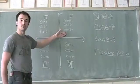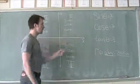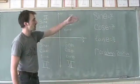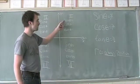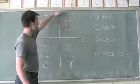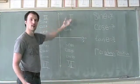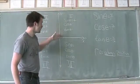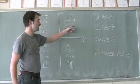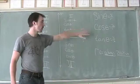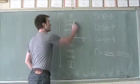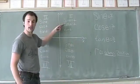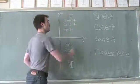In quadrant 1, both the x value and the y value are positive. Since r is always a positive value, the sine of theta — which is y divided by r — is positive divided by positive, giving a positive value. Cosine of theta has a positive x divided by r, which is always positive, so cosine is also positive. Tangent, from the quotient identity of sine divided by cosine, is positive divided by positive, another positive value.